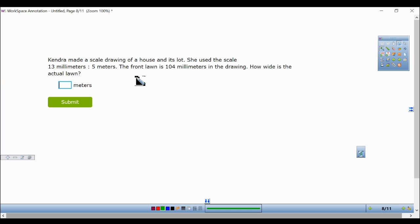So we already see that the scale is 13 millimeters is equal to 5 meters. Meters with meters, we're trying to find how wide is the actual lawn. The actual lawn is going to be in meters, so that's where my x is going to be. So x meters. And we know that the front lawn is 104 millimeters in the drawing, so 104 millimeters.